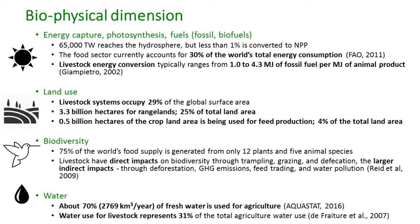In developing countries, more than 50% of total arable land is dedicated to feed production. On biodiversity, we are very much dependent on just 12 plant and 5 animal species that generate 75% of total food supply. Livestock have direct impacts on biodiversity through physical interaction with grazing resources, and large indirect impacts through deforestation, greenhouse gas emissions, feed trading, and water pollution.